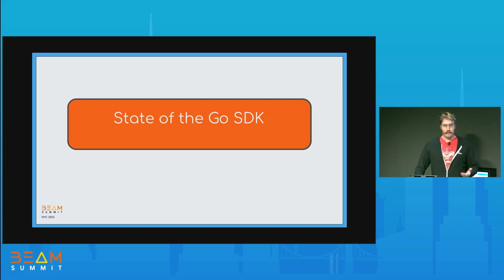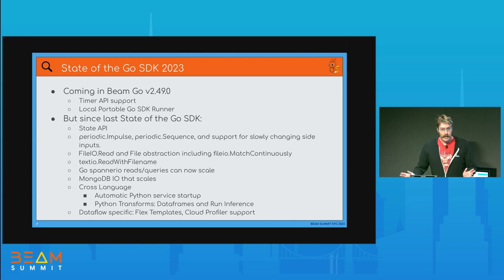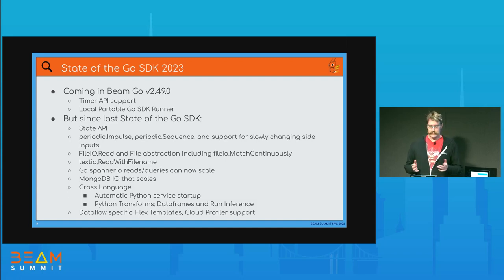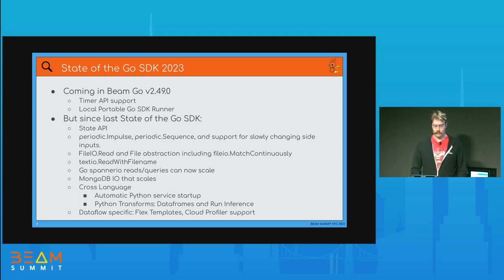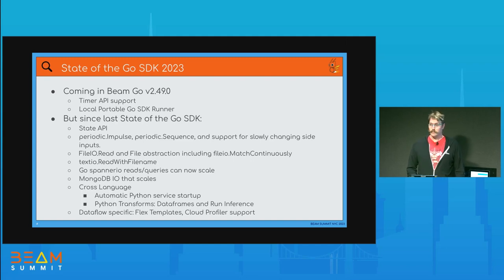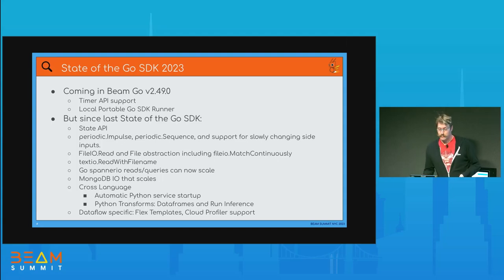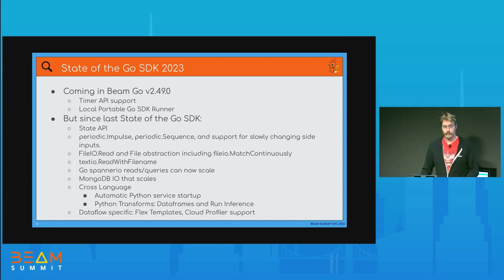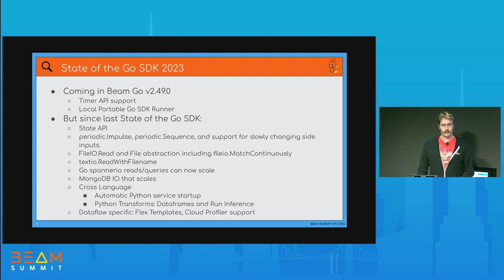Now for a brief state of the Go SDK. As of 2.49, the SDK is nominally feature complete in terms of core Beam features, because we'll end up having a proper timer API finally, to go along with what already exists from last year — a state API. As well as a bunch of contributions from folks that were not me or my team at Google, including a periodic impulse and sequence, support for slowly changing side inputs, and additional abstractions for file I/O. It's been a long time coming, but as you might have seen at John Casey's talk this morning, writing IOs is very hard.